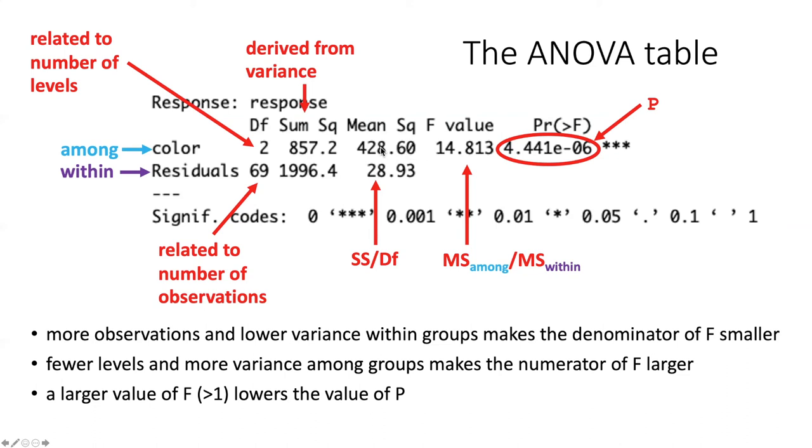So we can take this mean square for the among variation divide by the mean square of the within variation. And that's where this F value comes from. The F value does not have any sort of simple way to relate it to the P value. It has to do with a particular distribution called the F distribution. But fortunately, R will just figure this out for us.